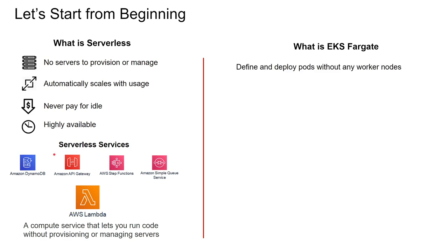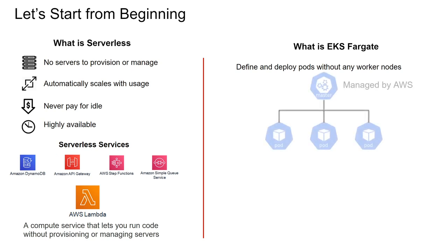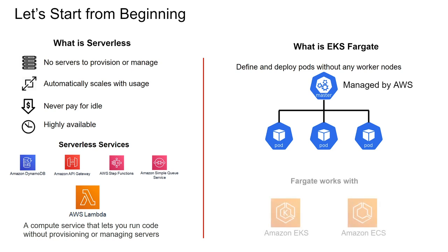What is EKS Fargate? With EKS Fargate, you define and deploy pods without any worker nodes. There is still a control plane and that is managed by AWS. Fargate works with both Amazon EKS and Amazon ECS, but in this video we are going to compare Lambda with EKS Fargate specifically.